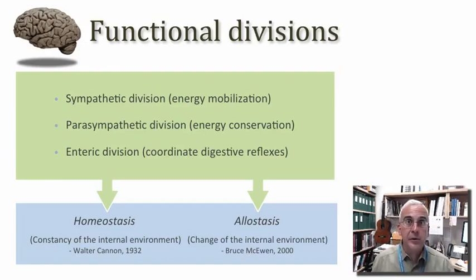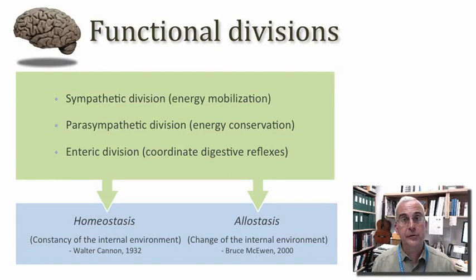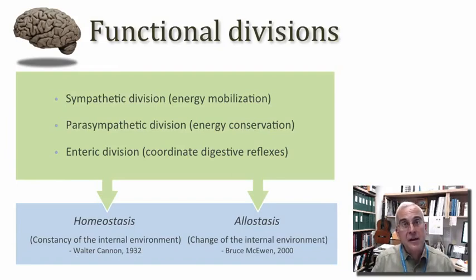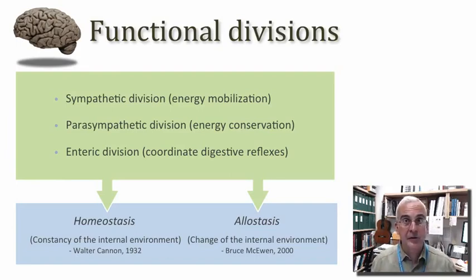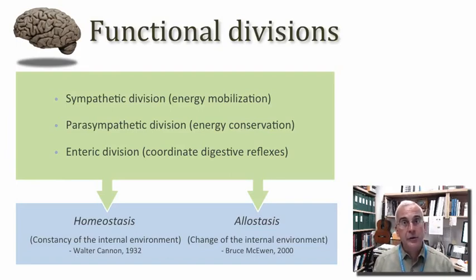These two terms — homeostasis and allostasis — capture what the visceral motor system is all about: maintaining the constancy of the internal environment, while also having the capacity to radically alter the state of the internal environment when conditions demand such action. We'll see examples of how these two aspects of visceral motor function play out.